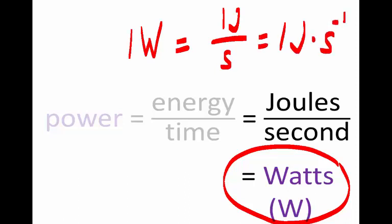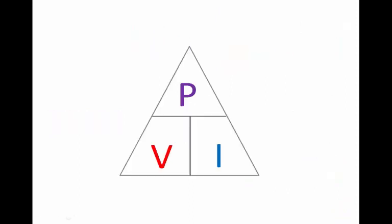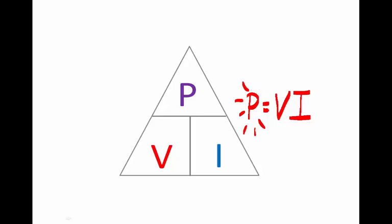We can calculate power using different formulae. Of course, energy per time is the definition and the fundamental formula. But another formula that we find very useful in electricity is given by this triangle: power is equal to potential difference across a component, multiplied by the current strength through that component. That gives the power dissipated in or by that component — P equals VI.